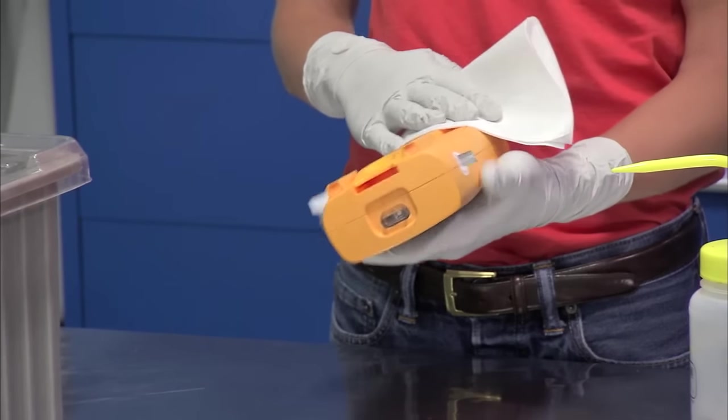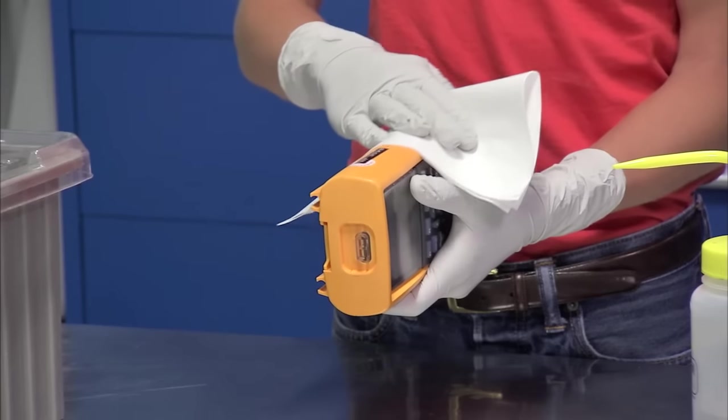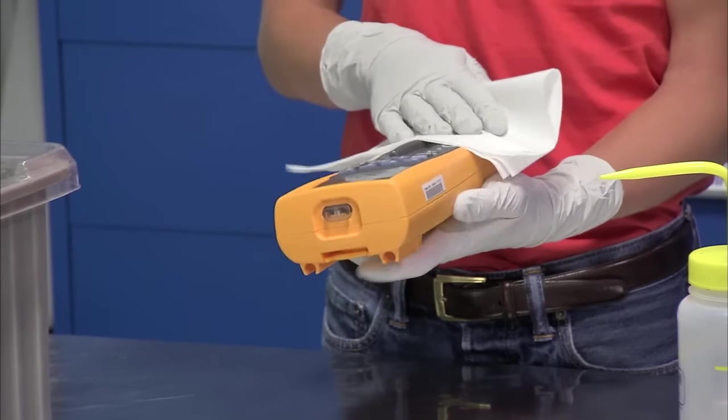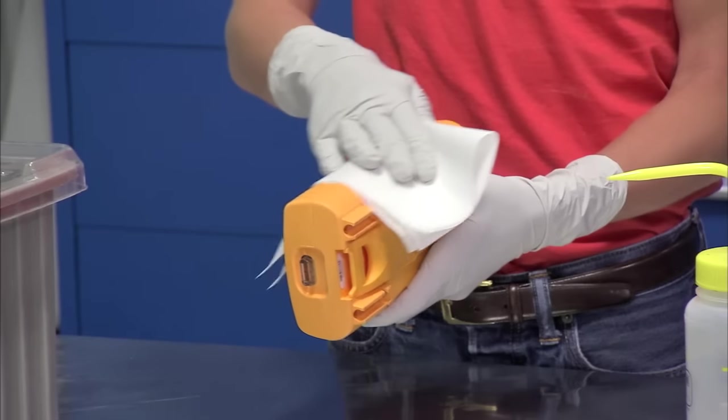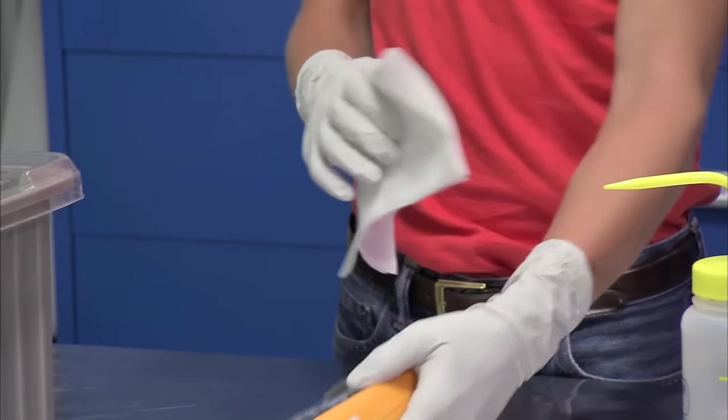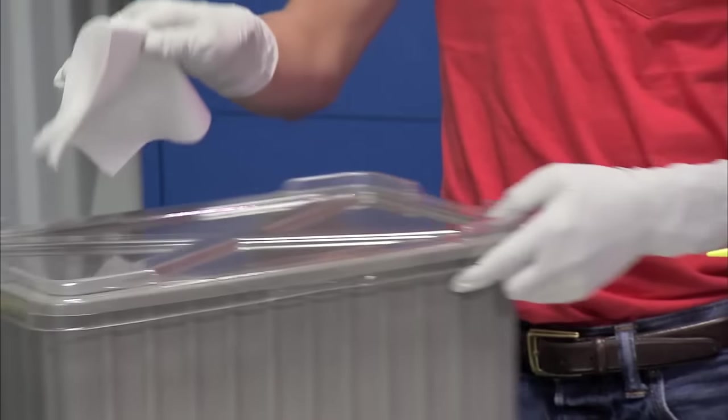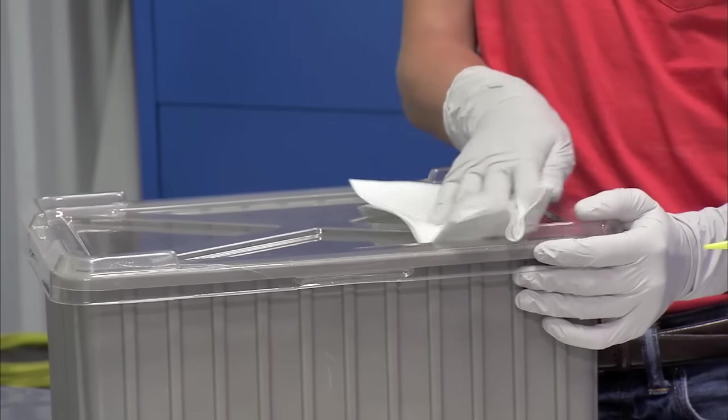Next, wipe down the outer surfaces of any tools and hardware that you plan on bringing into the clean room. This will reduce the amount of particles you introduce to the room. If you are carrying the items in a container, such as a tote, the outer surfaces of the tote must also be wiped down.